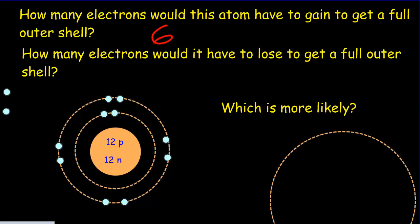What do you think is going to be more likely: to gain six electrons or to lose two electrons? Hopefully you said that it would be more likely to lose two. It's easier to lose two electrons than to gain six electrons, simply because two is smaller than six.